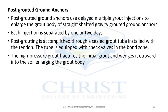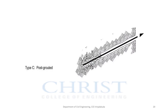Post grouting is accomplished through a sealed grout tube installed with the tendon, equipped with check valves in the bond zone. The high-pressure grout fractures the initial grout and wedges it outward into the soil, enlarging the grout body. As you can see in the picture, the already-set grout fractures and covers more space around the tendon compared to the previous anchor type, providing higher strength.